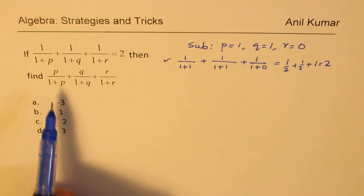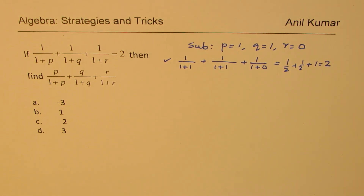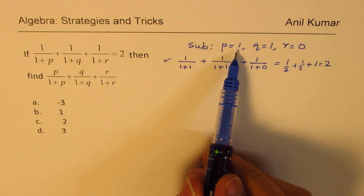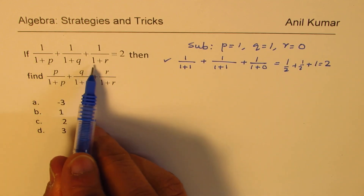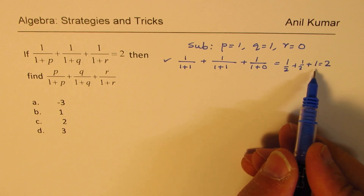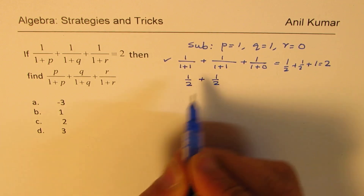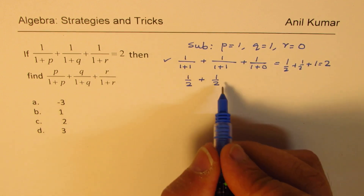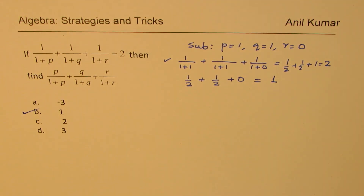Once you have these values P=1, Q=1, R=0, you can substitute in the target expression. The denominators are 2, 2, and 1 respectively. So we get 1 over 2 plus 1 over 2 plus 0. That gives half plus half as 1, so the answer is option B. A good substitution with the right ideas and tricks helps you find the correct answer in no time.